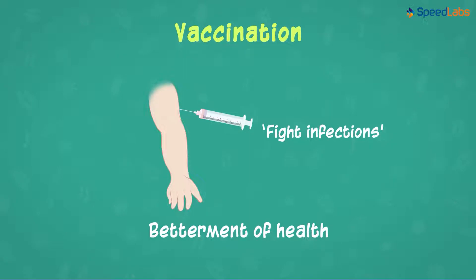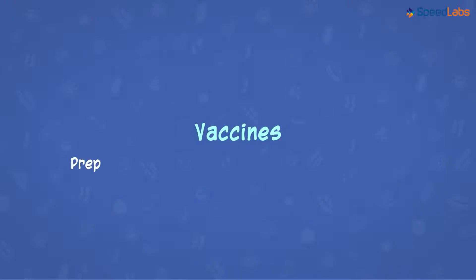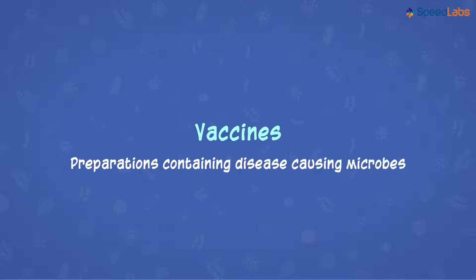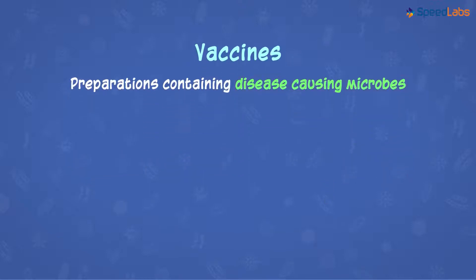So what exactly are these vaccines? Vaccines are preparations containing microbes that cause the disease against which we are protecting the body. Wait a second — did I say disease-causing microbes? How can we inject the body with the same microbes to protect against them? Doesn't that sound weird? Well, actually not. Let me explain.